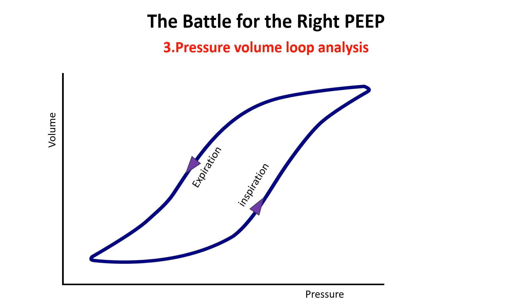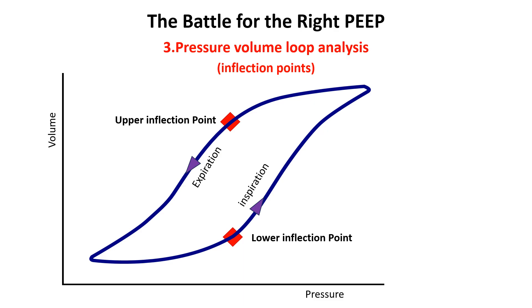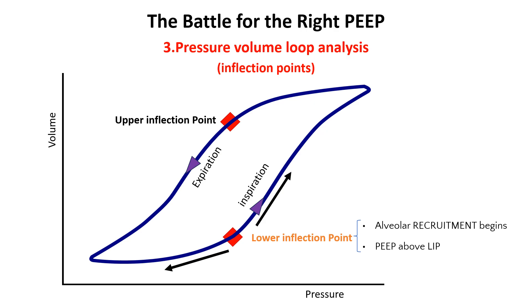The pressure-volume loop can be used to set optimal PEEP using various methods. The first method uses the lower inflection point, which is the pressure at which lung compliance suddenly improves during inflation. Below this point, the lungs are stiff due to collapsed alveoli; at this point, many alveoli begin to open, making lung expansion easier. PEEP is typically positioned just above the lower inflection point to keep alveoli open throughout the breathing cycle. If PEEP is set too low, it can cause repeated alveolar collapse and reopening, leading to atelectrauma. Conversely, setting PEEP too high can result in overdistension of already open alveoli, increasing the risk of barotrauma.